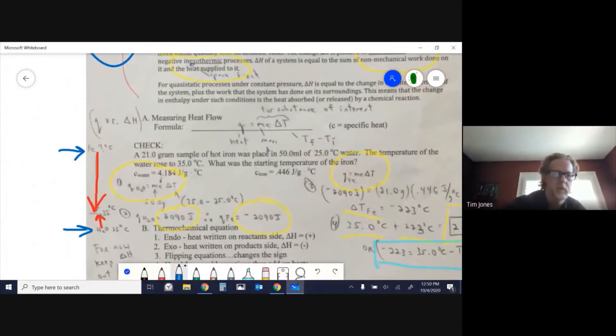Now I want to point out q versus delta H. q is the quantity of heat - just an amount of heat, not relative to anything. In this example, the 2090 joules is just the amount of heat. Delta H is the amount of heat per mole - it's relative to an amount of something. You can think of delta H as being more sophisticated than q.